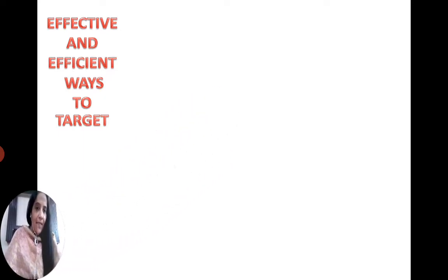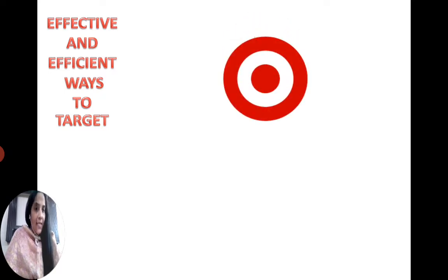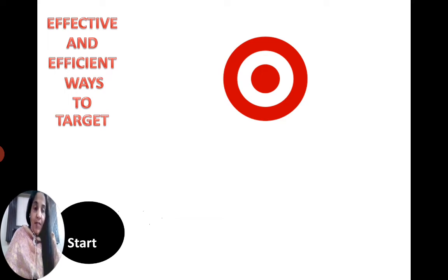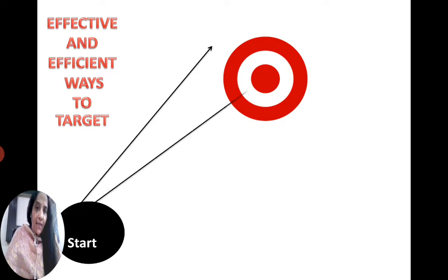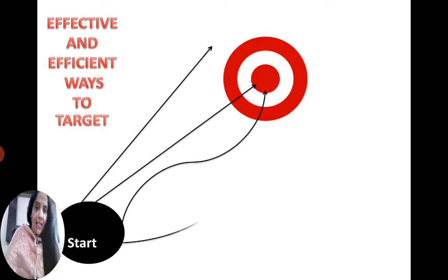For example, we have a certain type of target set up and we have to start. We have different types of options to achieve that particular target — four options. With the first option, it does not hit the target. The second option hits the target. The third option also hits the target but the path is diverted. The fourth option goes here and there but never achieves the target.